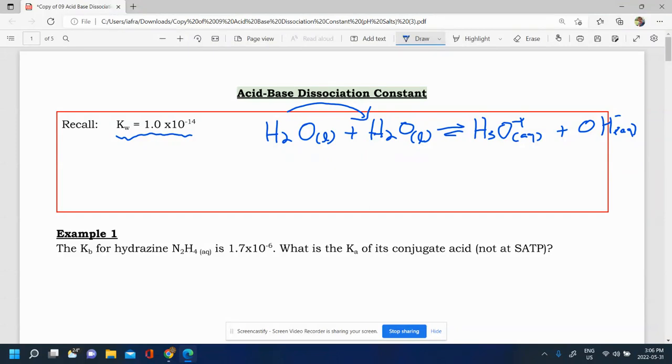And you can write an equilibrium expression for this. And so if you do that you get K is equal to the concentration of H3O plus times the concentration of OH minus. And that special K is called Kw. It's always equal to 1.0 times 10 to the power of negative 14.